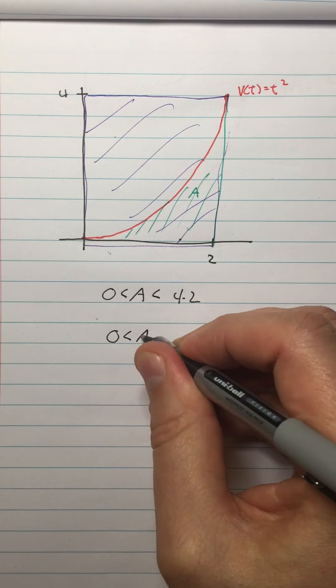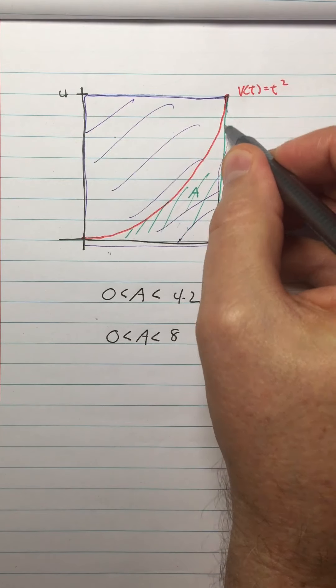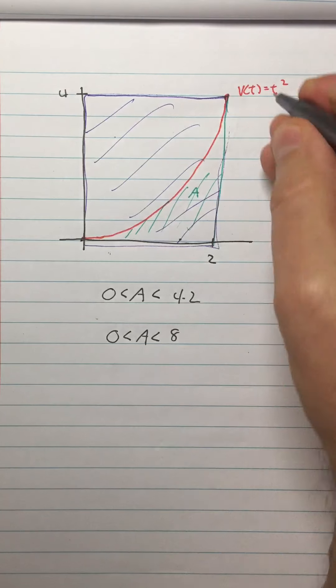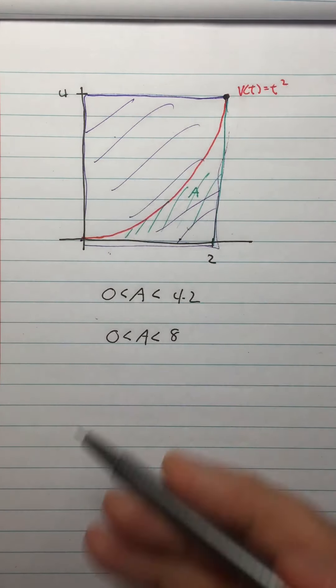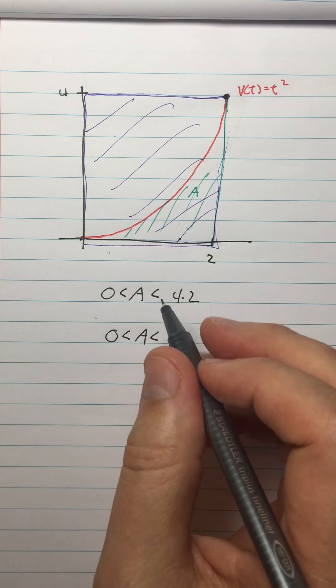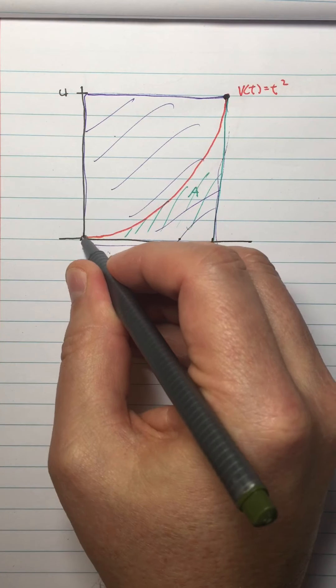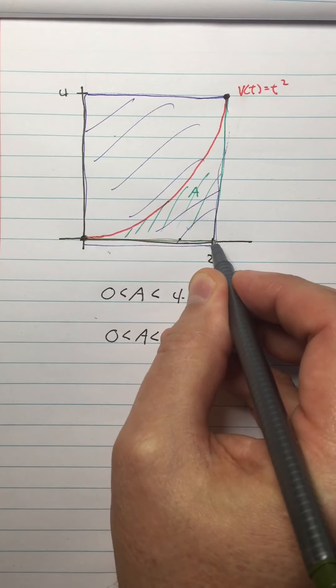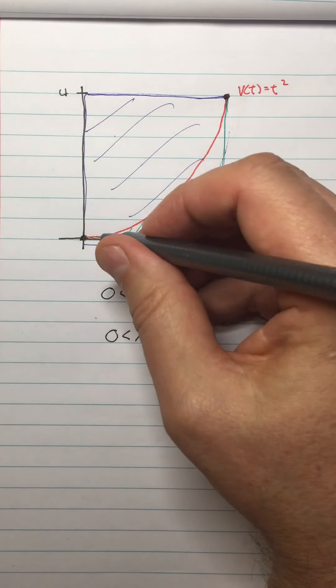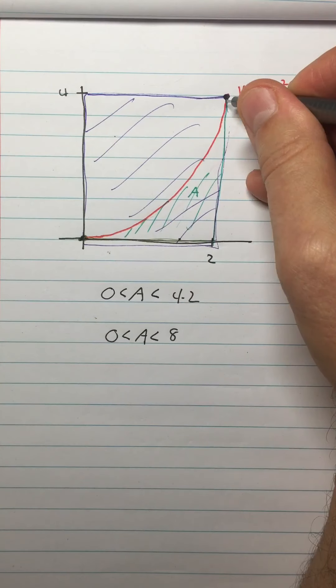So I know that the area is between zero and eight. Now one way you can think of what I just did is we said let's build a rectangle around this function using the right end of the curve. The zero we will find it useful to think of as what if I built a rectangle using the left end of this function, then the height of that rectangle would be zero. So what I know about this area is it's between the zero rectangle that I get from this endpoint and the eight rectangle that I get from that endpoint.